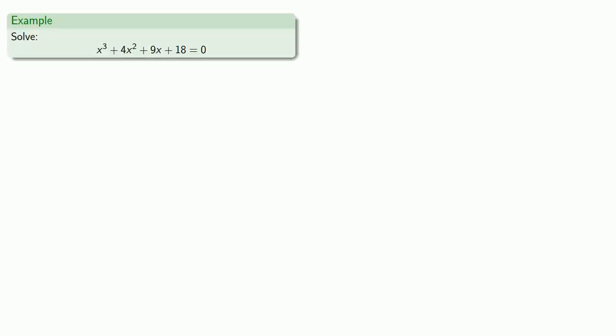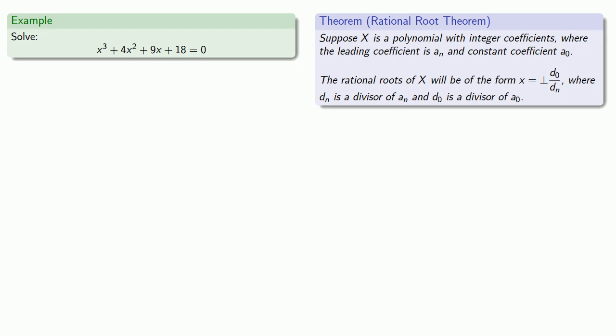So let's consider our polynomial equation x cubed plus 4x squared plus 9x plus 18 equals 0. The left-hand side is a polynomial with integer coefficients, and so the rational root theorem guarantees that a rational root will be among the divisors of 18 over the divisors of 1.